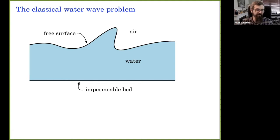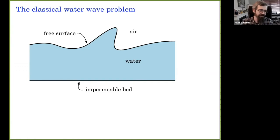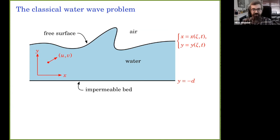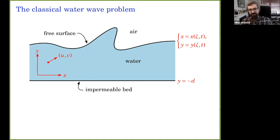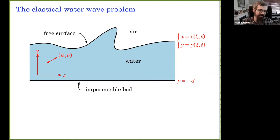We'll have a detailed model of the water but a very crude model of the air, which you can justify in various ways. Everything today is 2D — x is always the horizontal variable, y is always the vertical variable — and I'll use u and v for the velocity components of the velocity field pushing the fluid particles around.